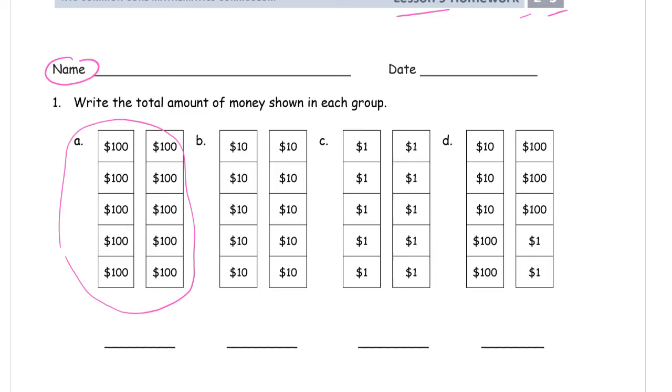One, two, three, four, five, and there's two sets of them. So there's five here, five there. That's ten hundreds, which is a thousand dollars.